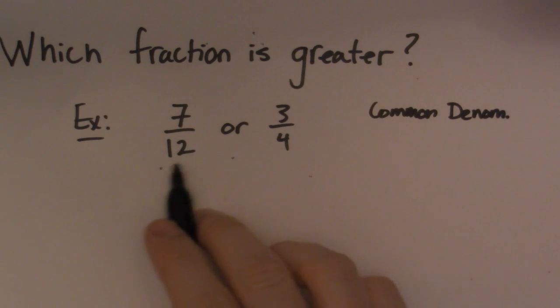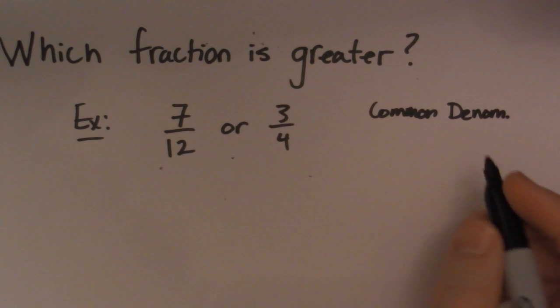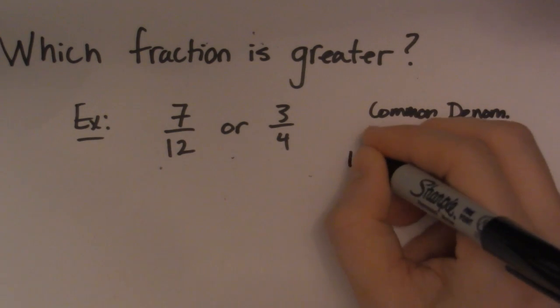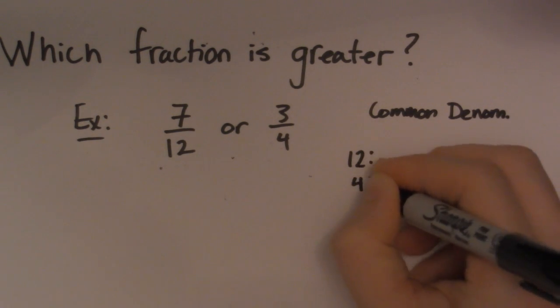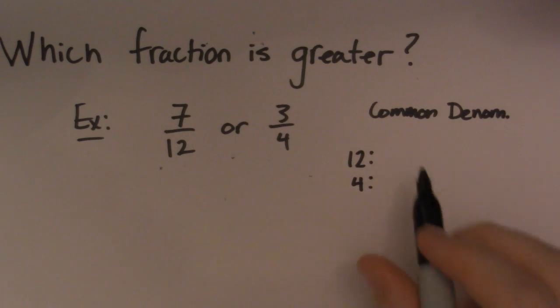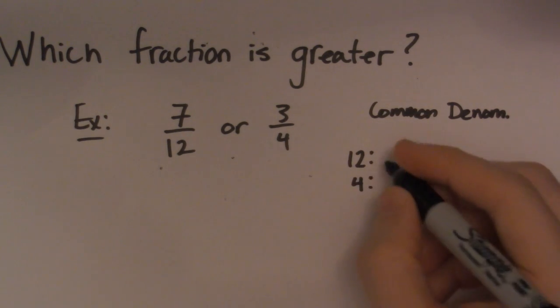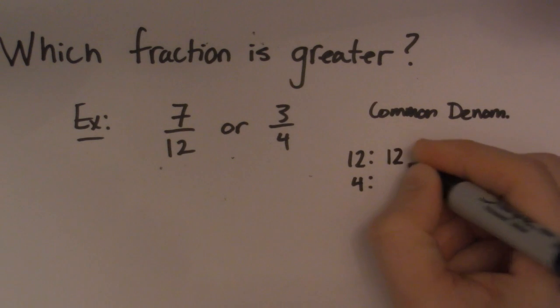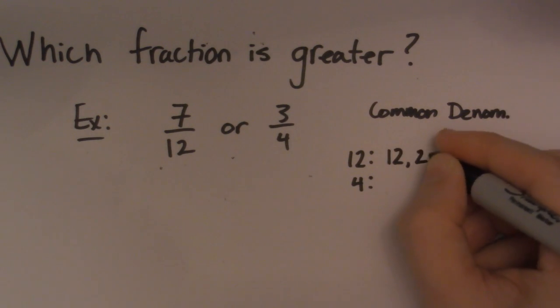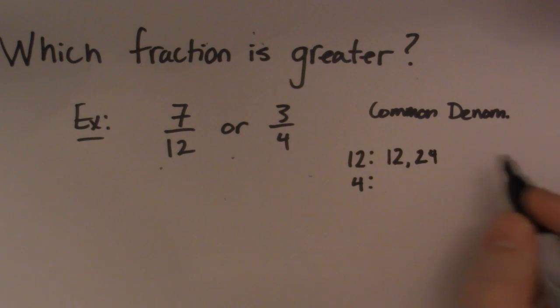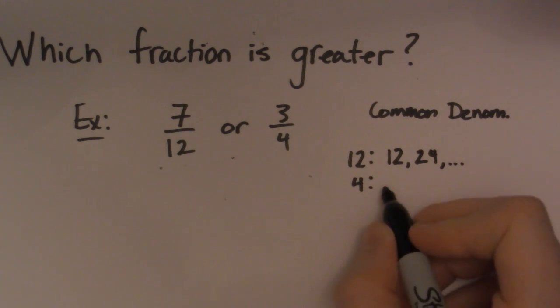So if I'm looking at 12 and 4, then one of the things I can do is actually make a little list. So if you're not good at making common denominators, then all I'm going to do is show you a little cheat to be able to do that. So make a list of your denominator. So start with 12 and 4 and then 12 and then add another 12. So another 12 would be 24. And you can continue this list as long as you need it.